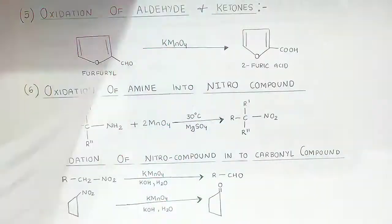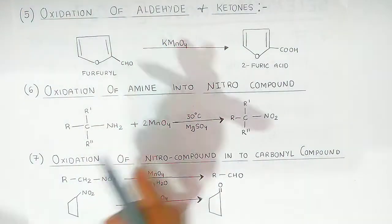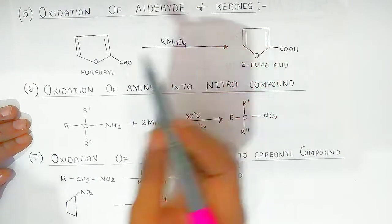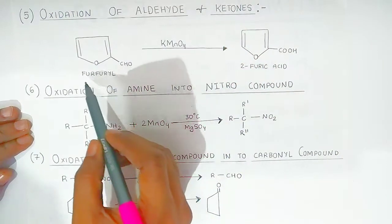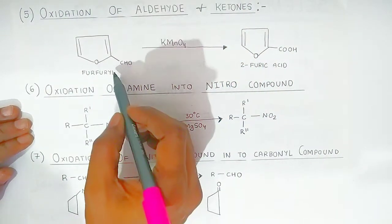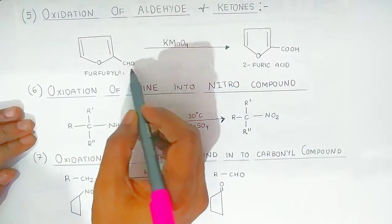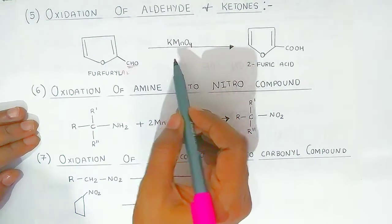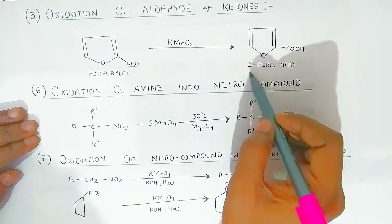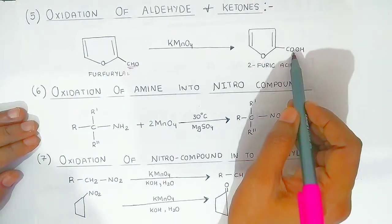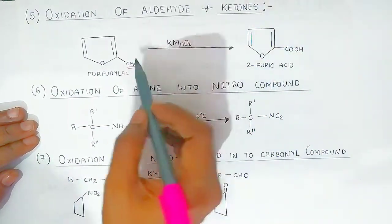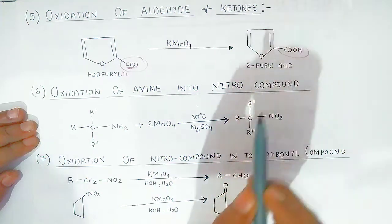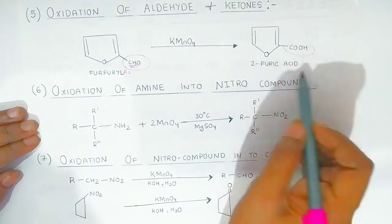Now we are going to see the oxidation of aldehydes and ketones. Here, the aldehyde group is oxidized and converted into the corresponding acid group — that is called fluoroacid. So the aldehyde is converted into an acid group.